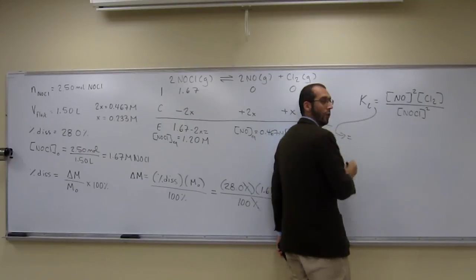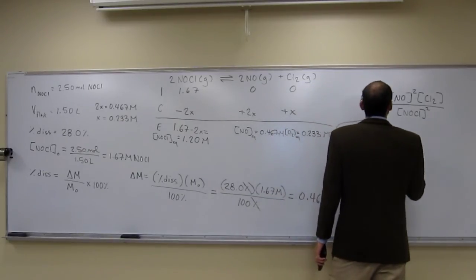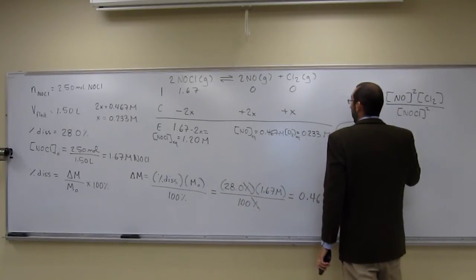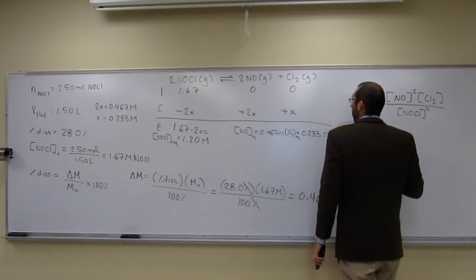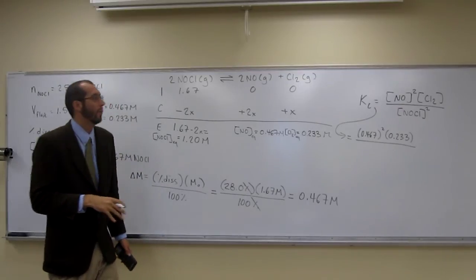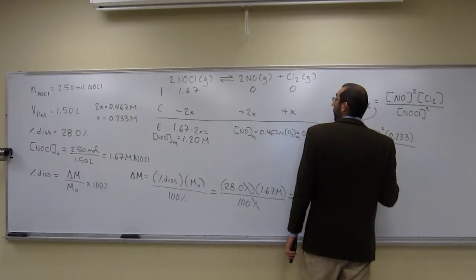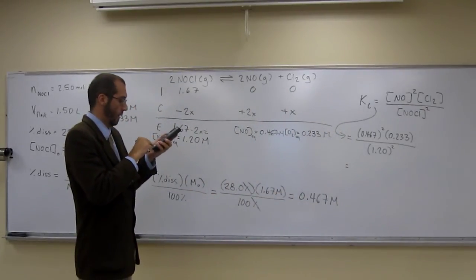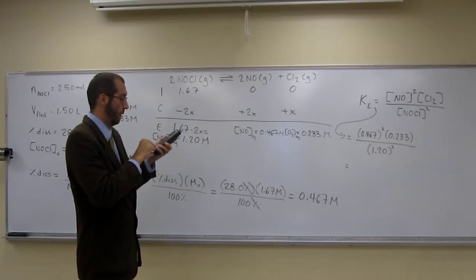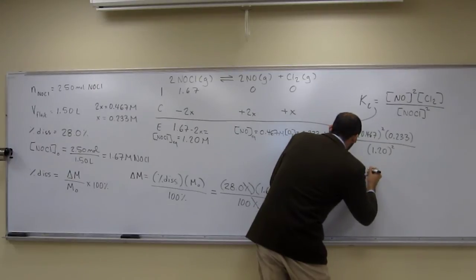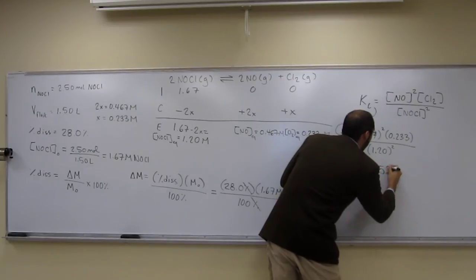So now let's plug those values in. Did you already do it? Did you get the right answer? Hopefully you did. We want nitrogen monoxide. First is going to be 0.467. We're going to square that. Multiply that by chlorine, which is 0.233. And remember, in these KCs, KQs, all that stuff, we don't put any units. I know oftentimes we want to. And then at the bottom, 1.20 squared. So 0.467 squared times 0.233 divided by 1.2 divided by 1.2. And I got something like 0.0353 as my KC.